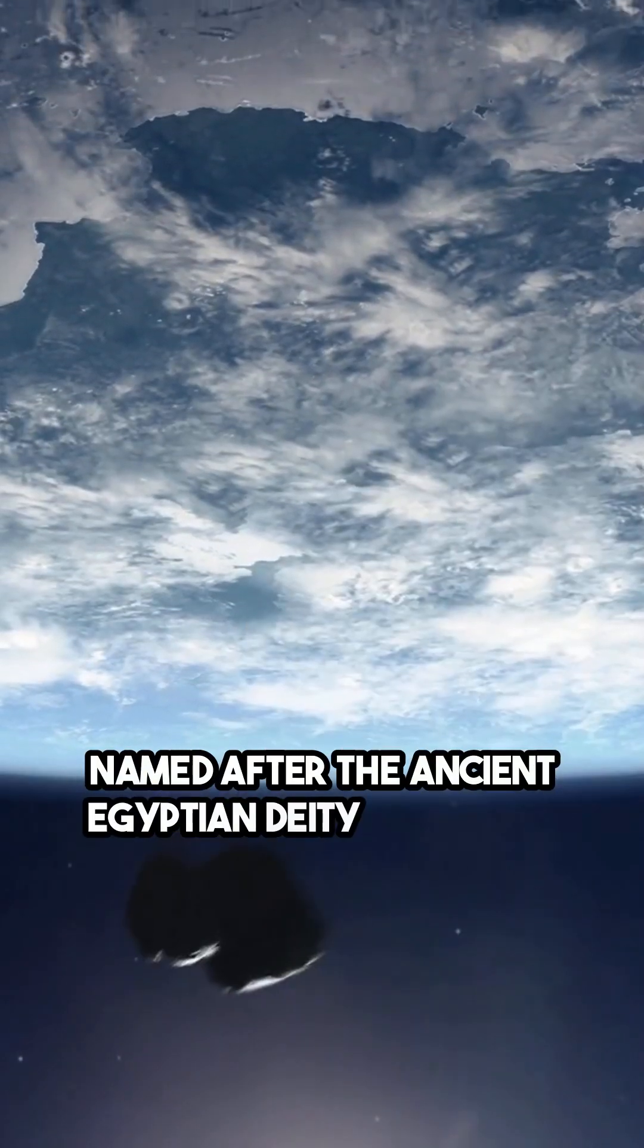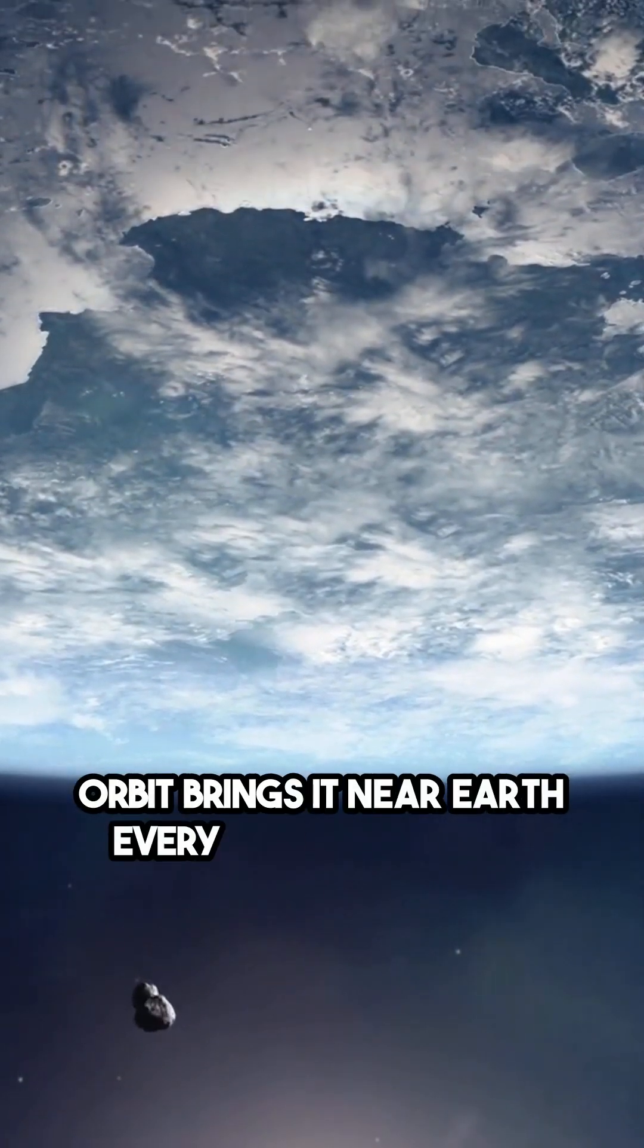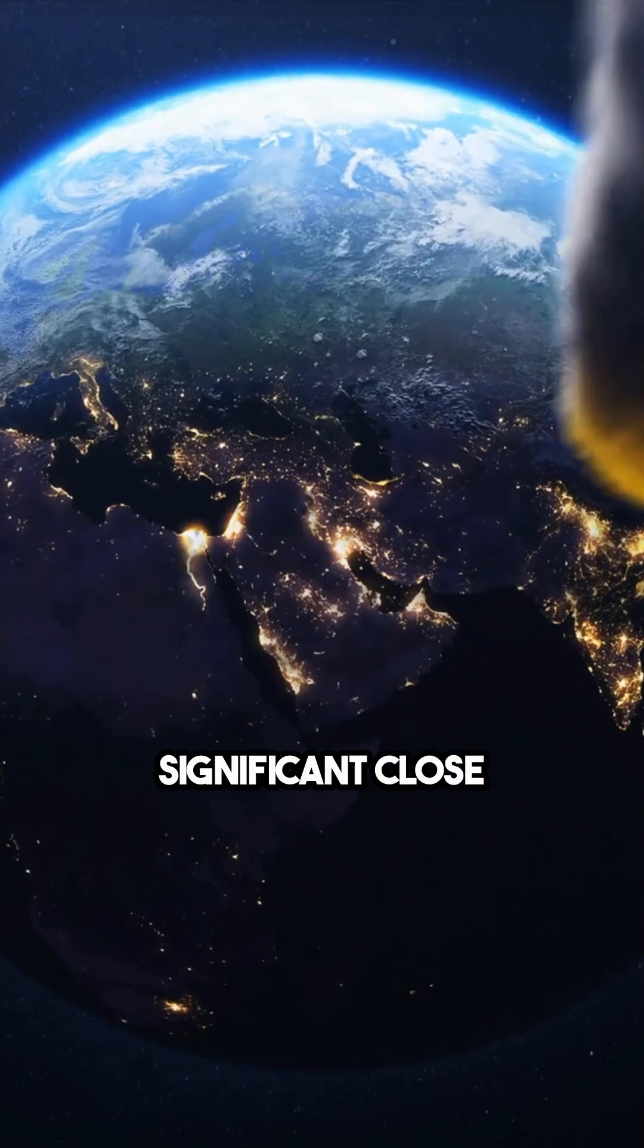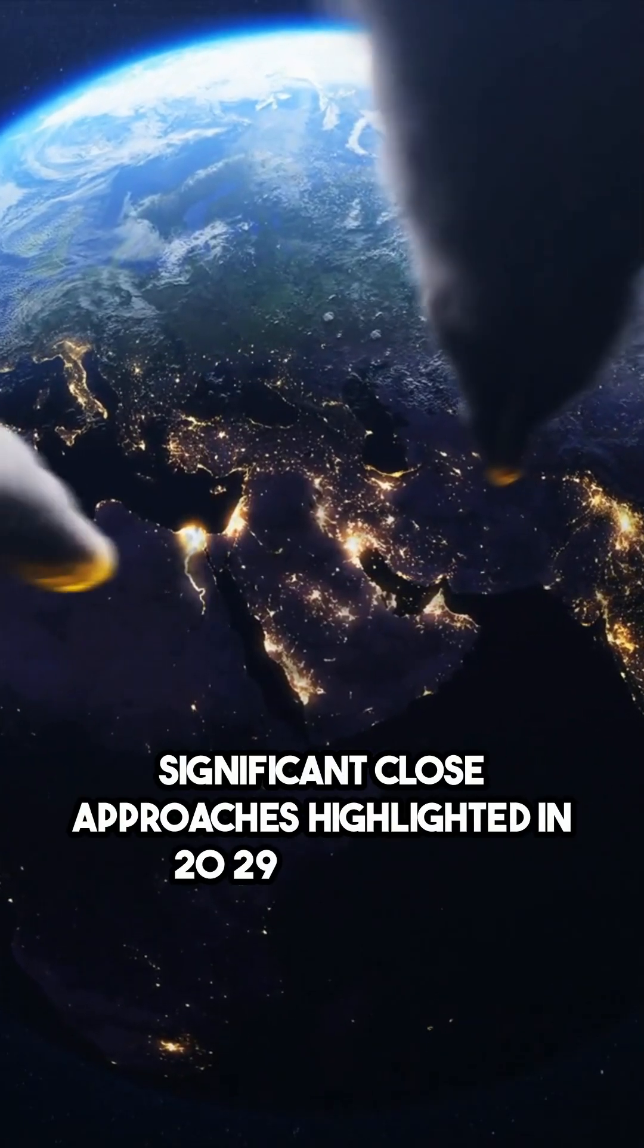Named after the ancient Egyptian deity of chaos, Apophis' orbit brings it near Earth every few years, with significant close approaches highlighted in 2029 and 2036.